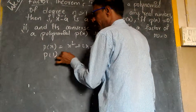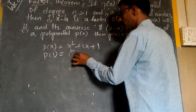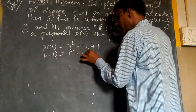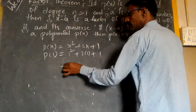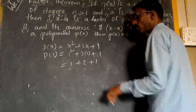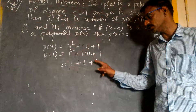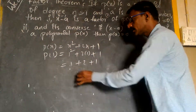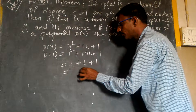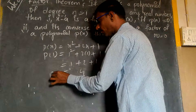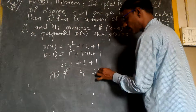p of 1: I take 1 square plus 2 into 1 plus 1. That is 1 plus 2 plus 1. Since 1 square is 1, and 2 times 1 is 2, this equals 4.